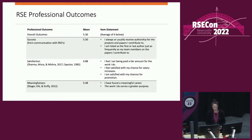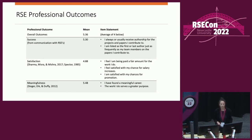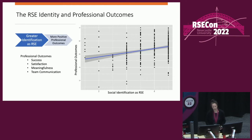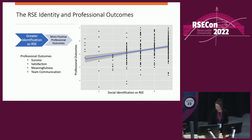In terms of professional outcomes, we found again that they were fairly high, although RSEs felt that they had a higher level of success and a higher level of meaningfulness in their work relative to a significantly lower level of satisfaction, at least as reflected in terms of salary and promotion concerns. Once again, we found that identifying more as an RSE predicted more positive professional outcomes across outcomes and in the aggregate. We also included the quality of team communication within those primary work teams — more evidence of the importance of having this identity.